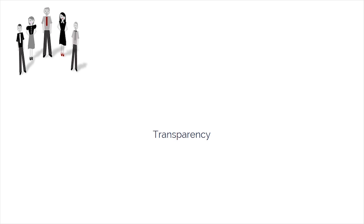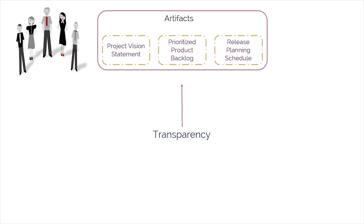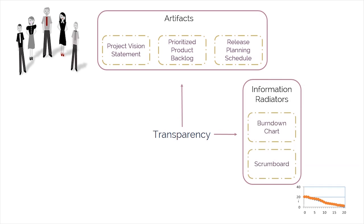In Scrum, transparency is provided by openly sharing the project vision statement, which can be viewed by all stakeholders and the Scrum team. The Prioritized Product Backlog with user stories can be viewed by everyone both inside and outside the team. The Release Planning Schedule may be coordinated across multiple Scrum teams.